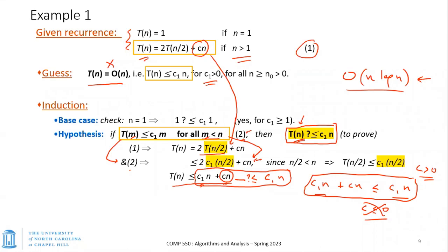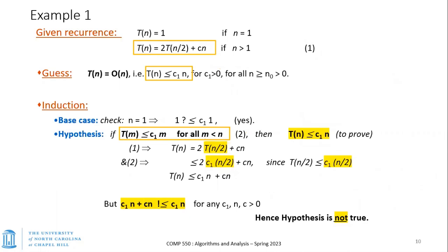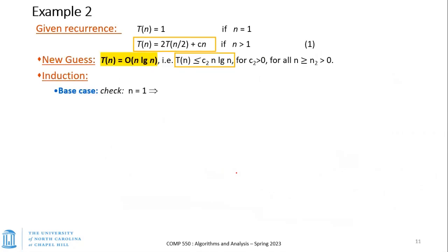Now let's make a more logical guess: T(n) = O(n log n). By definition, T(n) ≤ c₂·n·log n for some c₂ > 0 and all n ≥ n₂. I'm using c₂ here as a different constant from before.